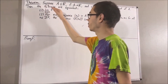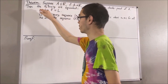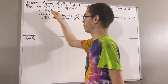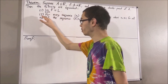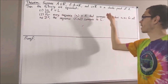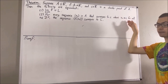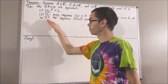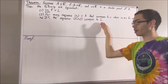Then the following are equivalent. One: the limit as X approaches C of F is equal to L. And two: for every sequence Xn in A that converges to C, where Xn is not equal to C for all positive integers N, the sequence F of Xn converges to L.